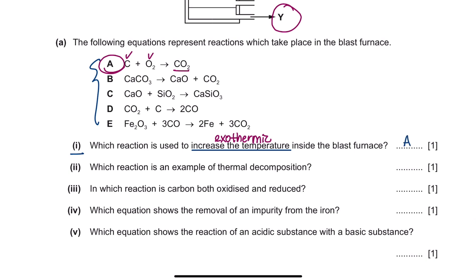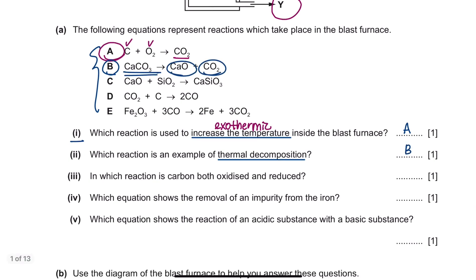Question 2 asks which reaction is an example of thermal decomposition. Thermal decomposition is the breaking down of calcium carbonate. As you can see, calcium carbonate becomes calcium oxide and carbon dioxide, so the answer is reaction B.